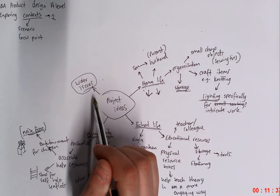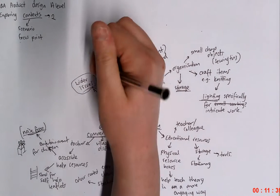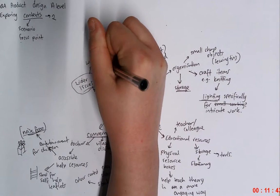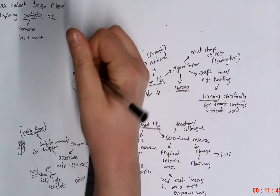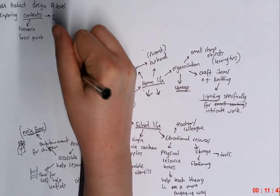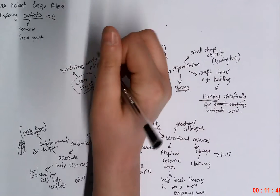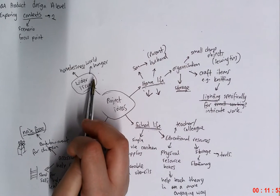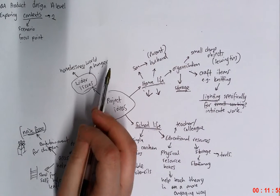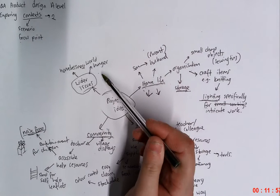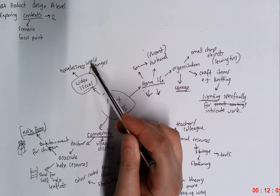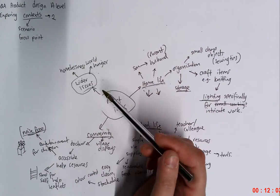Wider issues. Now this one is a little bit trickier. Because immediately we think of things like world hunger, we think of things like homelessness. Really, really big issues that, let's be realistic, we're not going to be able to solve these because, you know, we're still learning about the world of design and technology and product design. And how on earth am I going to solve world hunger?